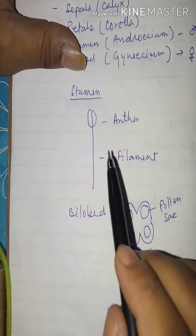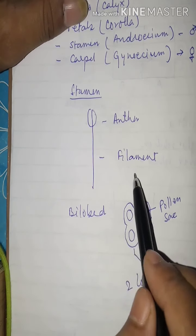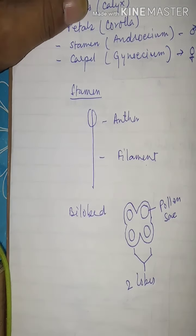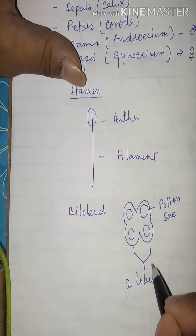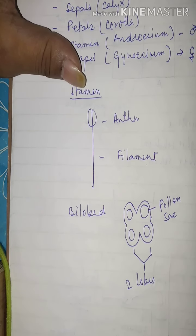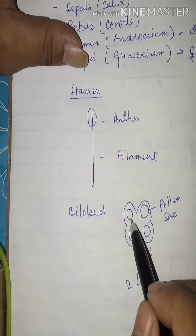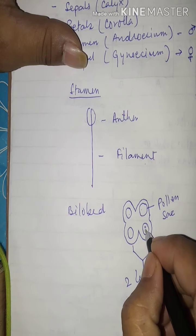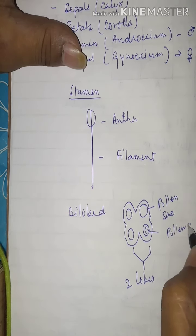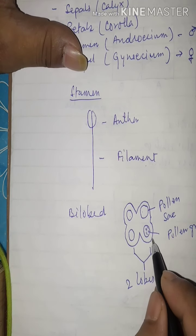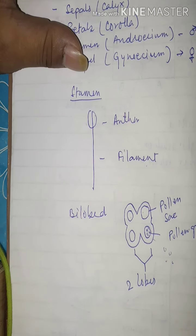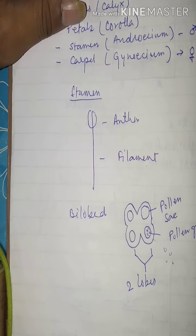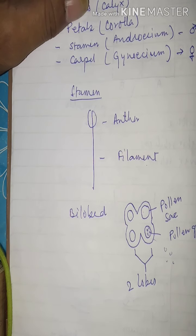The anther is present at the extremity of the long filament. It consists of two lobes, each lobe with two pollen sacs, so a single anther contains four pollen sacs. Each pollen sac contains powdery particles called pollen grains. When the anther ruptures after maturation, pollen grains are released and transferred via air, water, or insects to the female part — the stigma.